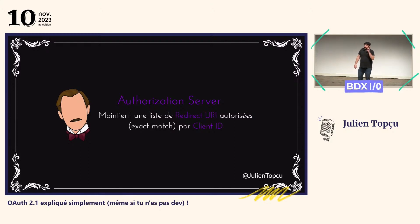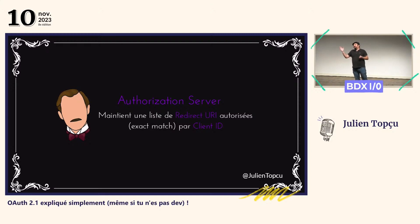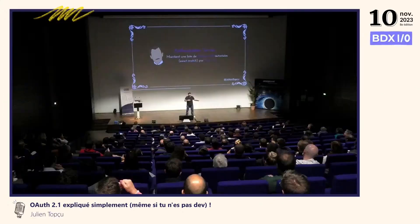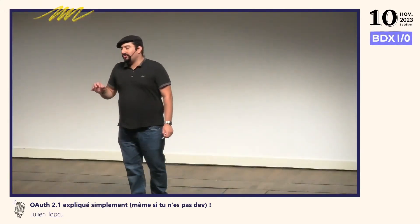C'est un nouveau truc d'OAuth 2.1. Jusqu'à OAuth 2, ce n'était pas forcément un exact match. C'est comme si vous listiez les neuf premiers numéros d'un numéro de téléphone en espérant que si le dixième change, vous tomberez tout le temps chez la même personne. C'est une nouvelle recommandation d'OAuth 2.1 : faire de l'exact match. Ça, c'est implémenté dans les authorization servers.